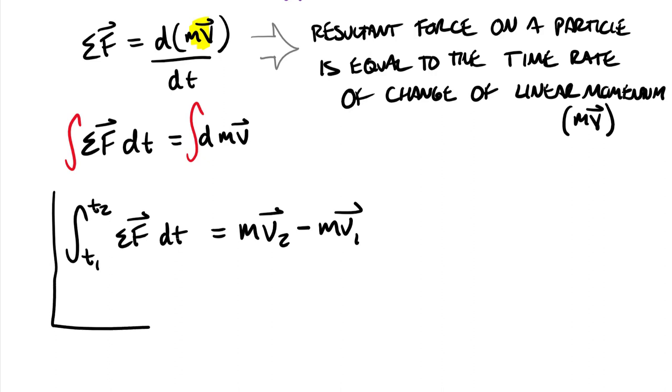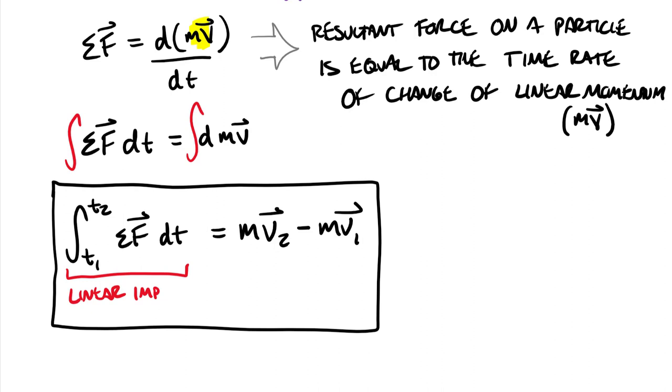So this is our fundamental equation. This is called our linear impulse, and the right hand side is the change in linear momentum.